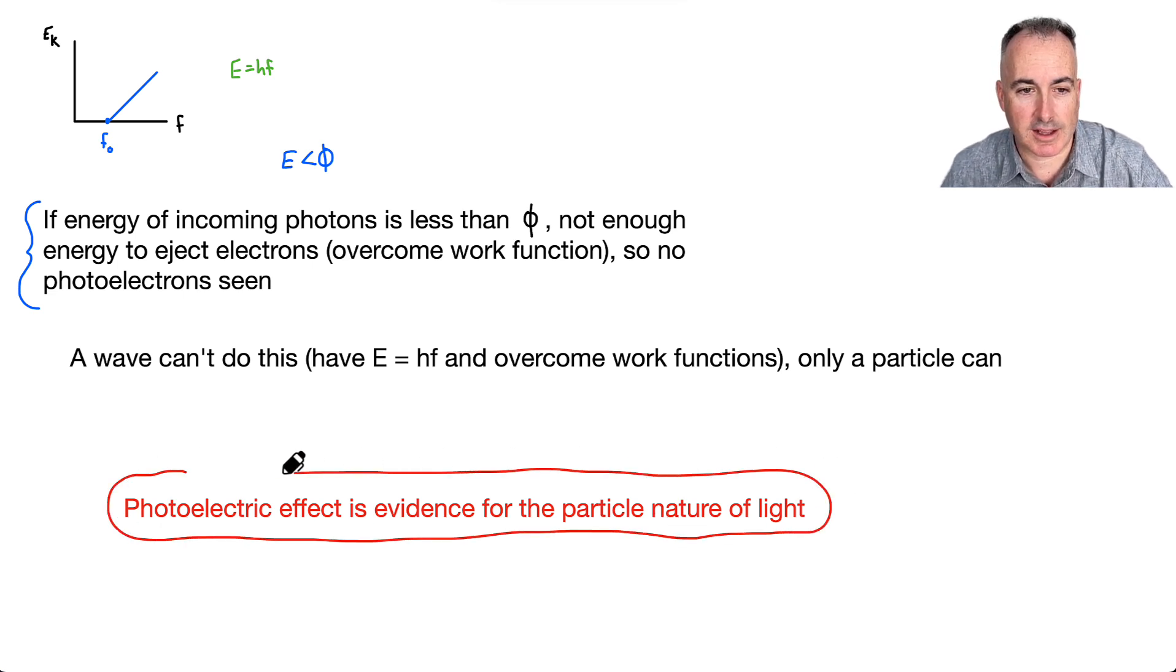So that means that the photoelectric effect is actually evidence for the particle nature of light. So if you follow this here, you can say, aha, light cannot be a wave, because a wave can't have a sufficient concentration of energy in order to do this. It turns out only a particle can. Amen. Thank you very much.